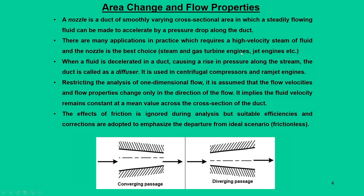In jet engines, nozzles provide the necessary thrust at the expense of pressure, because they accelerate the flow, and the reaction force from the exhaust gives the necessary force for the jet engine to fly. In the category of opposite action — when the fluid is decelerated in the duct causing a rise in pressure along the stream — that is called a diffuser. Typical applications include centrifugal compressor passages and ramjet engine intake systems, where the flow has to decelerate causing a rise in pressure.